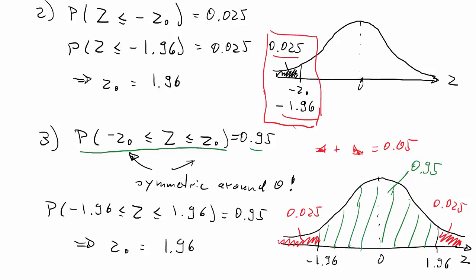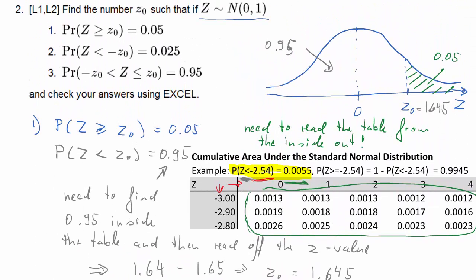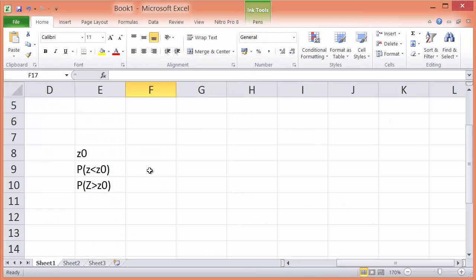Lastly, we were asked to check our results in Excel. And that's a very useful skill to have. So we'll start with the first problem. We figured out that the probability that Z is smaller than 1.645 is 95%.